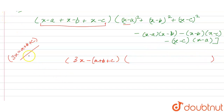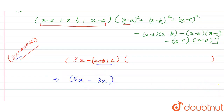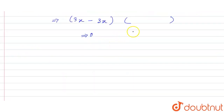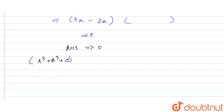Since a plus b plus c equals 3x, we get 3x minus 3x, which equals 0. And 0 multiplied by anything equals 0. So the RHS equals 0, meaning the LHS — (x minus a)³ plus (x minus b)³ plus (x minus c)³ minus 3abc — is also equal to 0.